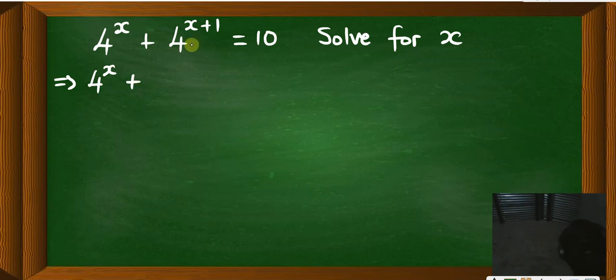Where this one should be rewritten like it is the same as 4 to the power x, then times again 4 to the power 1. Because if you have, according to indices, if the bases are the same and you're multiplying numbers of the same base, then you add the powers.